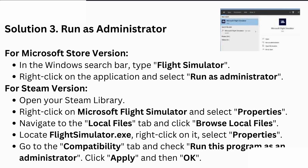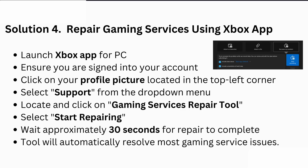You can also repair gaming services using the Xbox app. Launch the Xbox app on PC, ensure you are signed into your account, click on your profile picture in the top left corner, and select 'Support' from the drop-down menu. Locate and click on the 'Gaming Services Repair Tool', then select 'Repair' and wait approximately 30 seconds for the repair to complete. The tool will automatically resolve most gaming service issues.